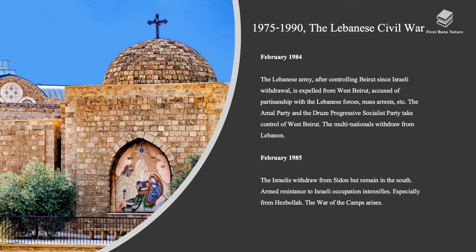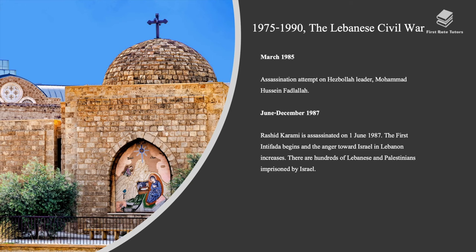In February 1985, the Israelis withdrew from Sidon but remained in the south. Armed resistance to Israeli occupation intensified, especially from Hezbollah, and the war of the camps arose. In March 1985, there was an assassination attempt on Hezbollah leader Mohammed Hussein Fadlallah. Between June and December 1987, Rashid Karami was assassinated on June 1st, 1987. The first intifada began and anger towards Israel in Lebanon increased. There were hundreds of Lebanese and Palestinians imprisoned by Israel.